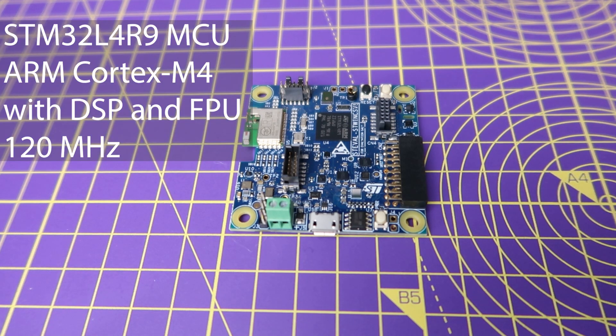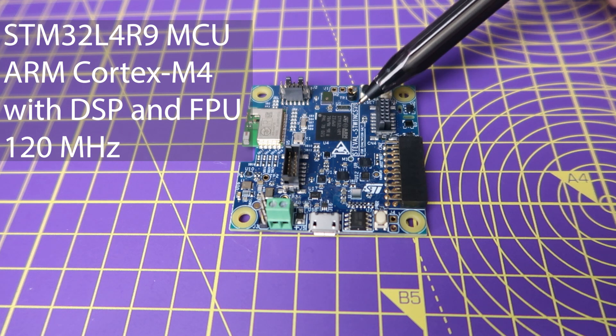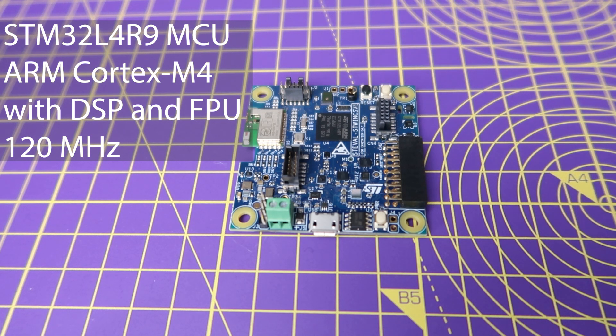The microcontroller on the core board is the STM32L4R9 MCU based on ARM Cortex-M4 core and can operate up to a maximum frequency of 120 MHz.